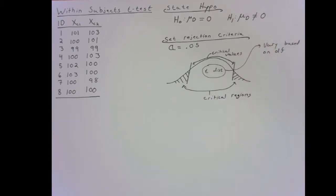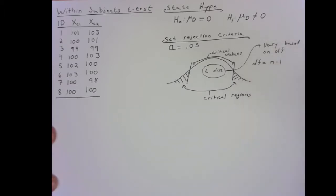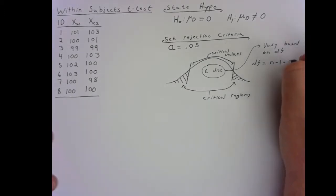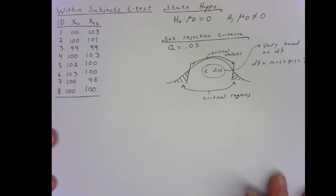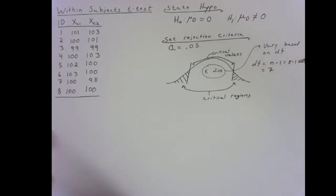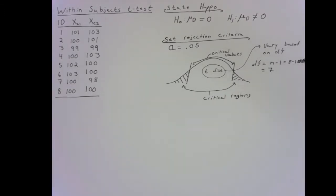For a t-test, specifically a dependent samples t-test, our degrees of freedom are going to be equal to n minus 1. N is our number of participants, which we see is 8. So we have 8 minus 1 to get us 7.